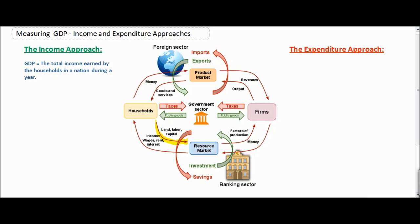In exchange for the provision of these productive resources, households receive income in the form of wages, interest, and rent.